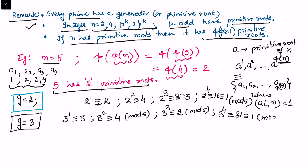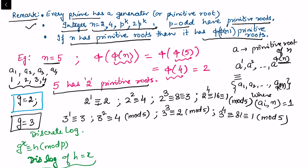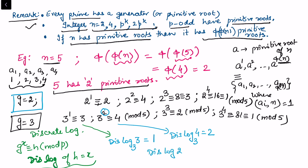From the definition g^x ≡ h (mod p), the discrete log of h is x — the exponent. With g = 3 and p = 5: discrete log(3) = 1, discrete log(4) = 2, discrete log(2) = 3, discrete log(1) = 4. This is exactly the same as what we studied as index of an integer. This is what we mean by the discrete log problem.